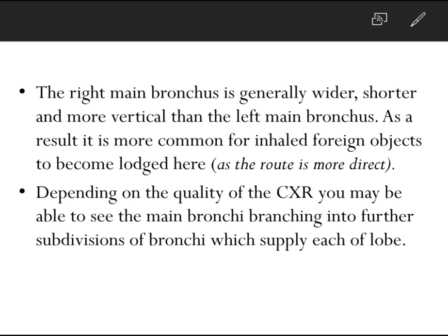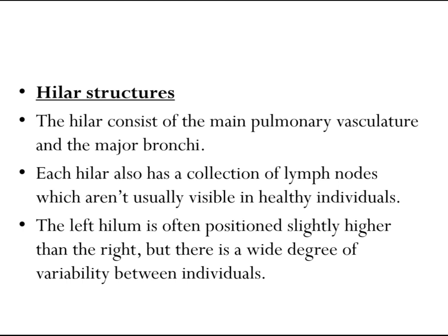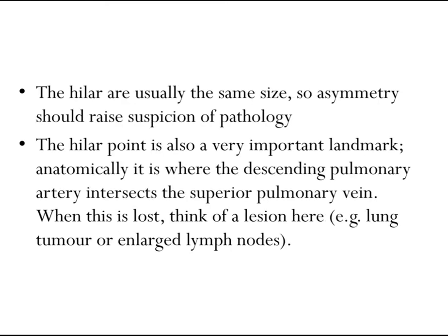As a result, it is more common for inhaled foreign objects to become lodged in the right main bronchus as the route is more direct. Depending on the quality of the chest x-ray, you may be able to see the main bronchi branching into further subdivisions supplying each lobe. The hila consists of the main pulmonary vasculature and the major bronchi. Each hilum also has a collection of lymph nodes, which aren't usually visible in healthy individuals. The left hilum is often positioned slightly higher than the right, but there is wide variability between individuals.